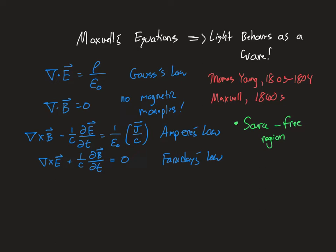Of course we know that light propagates across vast distances in space, and so we should expect that if light is going to be a wave we should be able to have it in vacuum. Source-free means there are no charges of any kind anywhere and no electric current of any kind anywhere. This is a special feature of the electromagnetic field: it can propagate through vacuum and does not need sources in order to propagate. We're just talking about the propagation of electromagnetic fields, not the creation of electromagnetic fields.